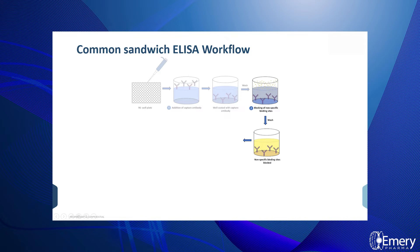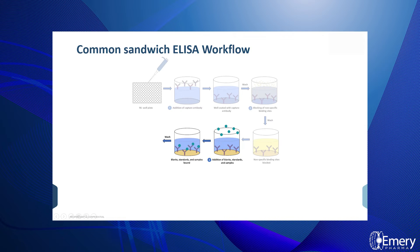Next, any unbound sites present on the surface of the wells are blocked by the addition of the blocking buffer. This is a key step to help reduce any nonspecific binding and the background signal. After incubation and washing of excess blocking buffer, blanks, standards, and diluted samples that contain the target antigen are added to the wells.